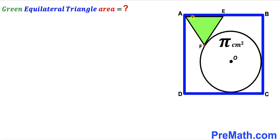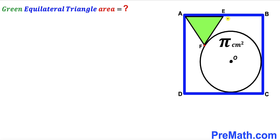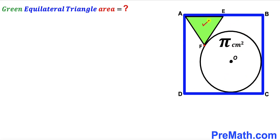Welcome to pre-math. In this video we have a green shaded equilateral triangle AEF and a circle with center O, fully inscribed in a blue square ABCD, as shown in the diagram. The equilateral triangle AEF and this circle are tangent to each other at point F. The area of this circle has been given as π centimeter square, and our task is to calculate the area of the green shaded equilateral triangle AEF.